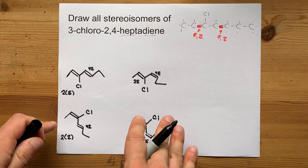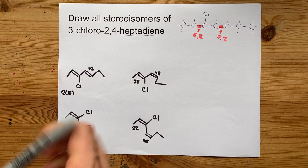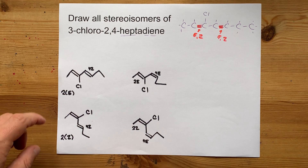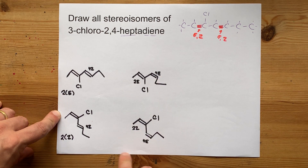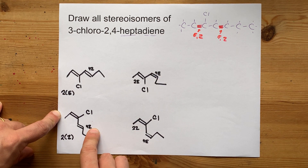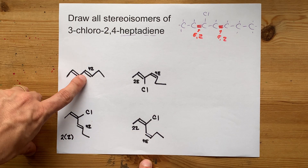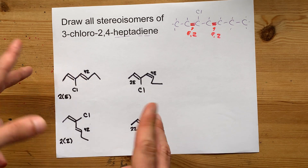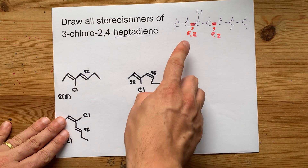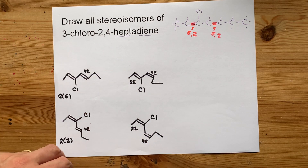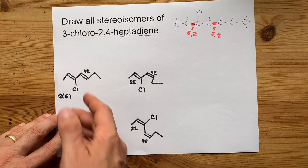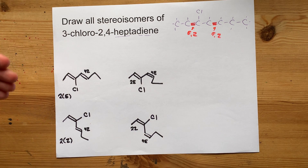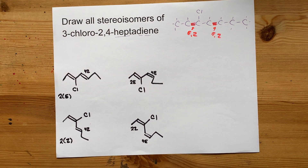So what I have here are all the possible combinations of E's and Z's: 2E,4E and 2Z,4Z, plus 2E,4Z and 2Z,4E. Two possibilities for each of two double bonds — two times two equals four stereoisomers total. There's all of them. Thanks for being with me. Best of luck.